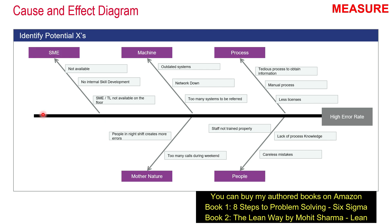The next thing the team did was create a fishbone diagram. They gathered the entire team in one room for a brainstorming session. High error rate was the head of the fish. Under process, potential causes included a tedious process to obtain information and a manual process. Under people, they identified careless mistakes, lack of process knowledge, and staff not properly trained. Under mother nature, they noted that people on the night shift made more errors, and too many calls during weekends increased workload on the first working day — Monday — leading to errors when working under pressure.